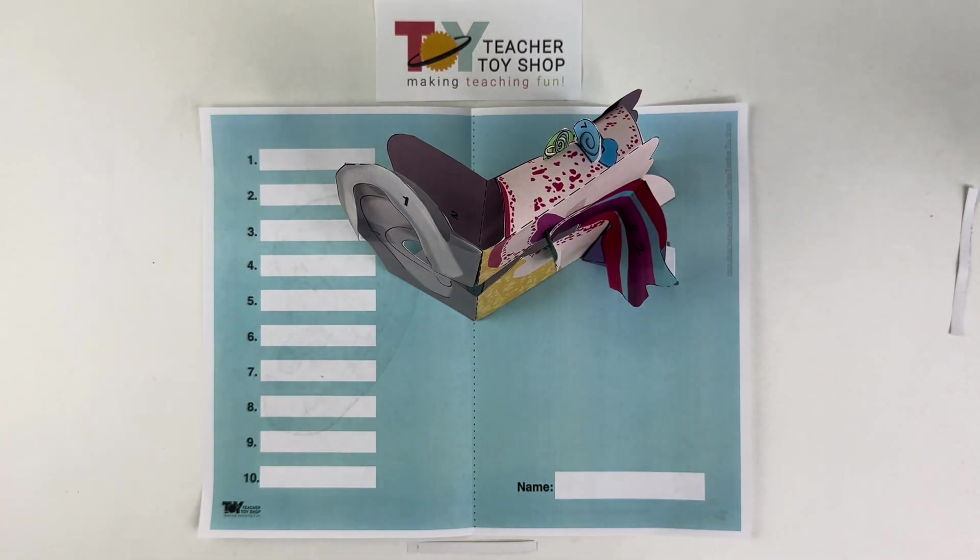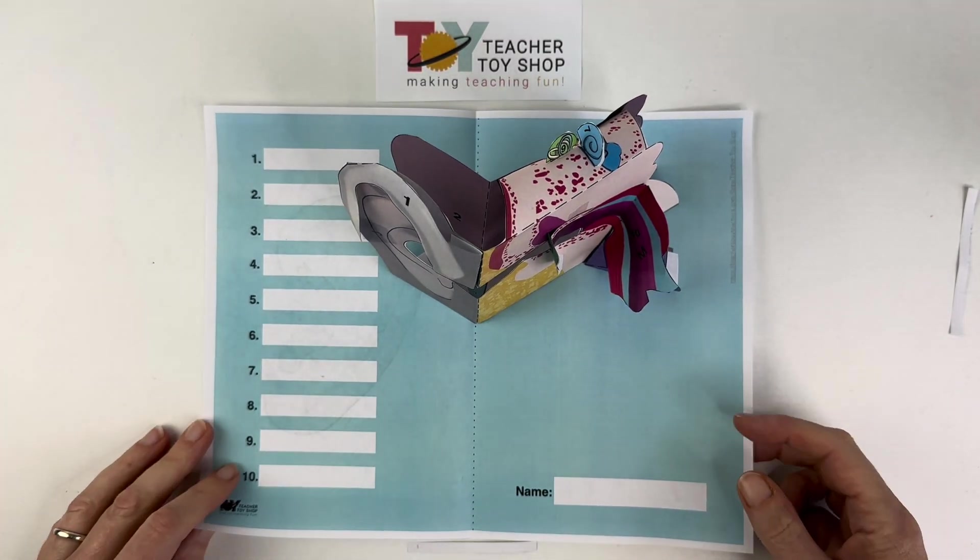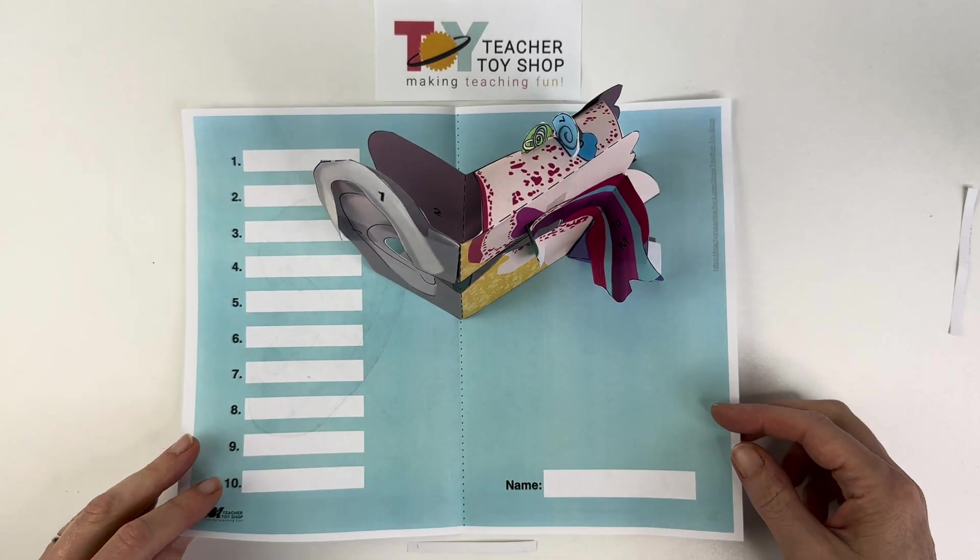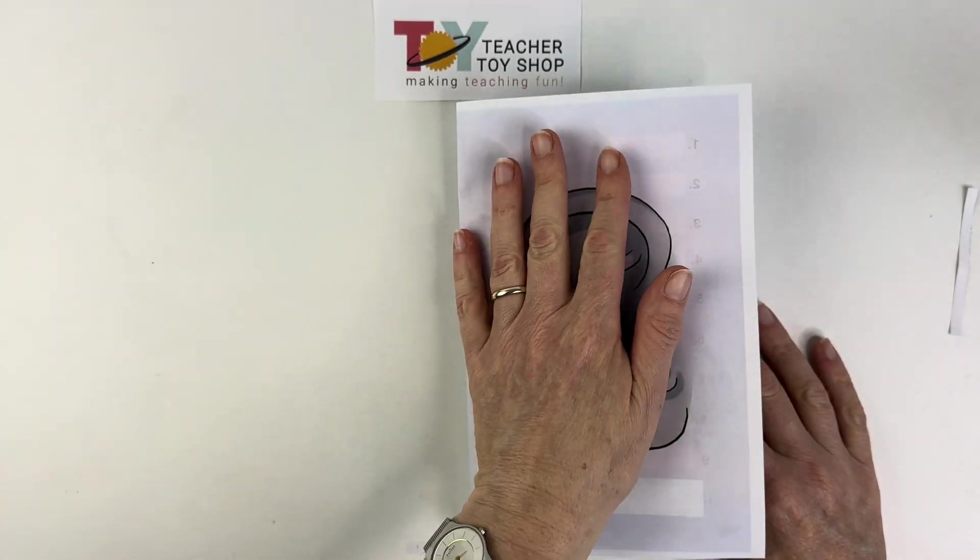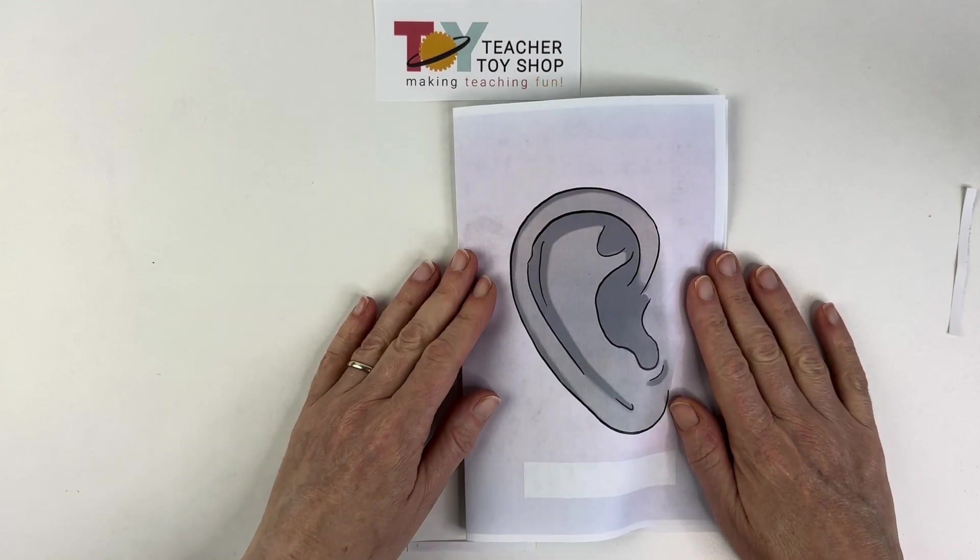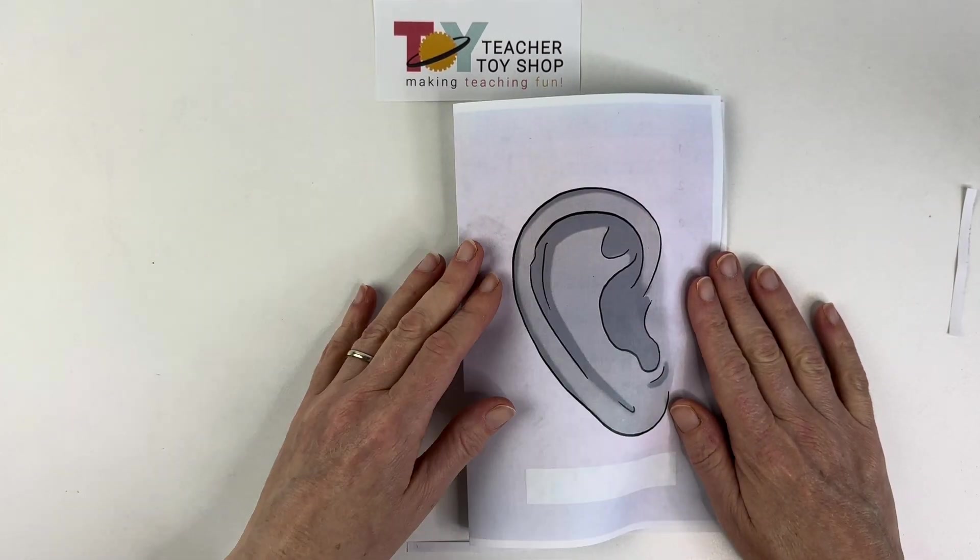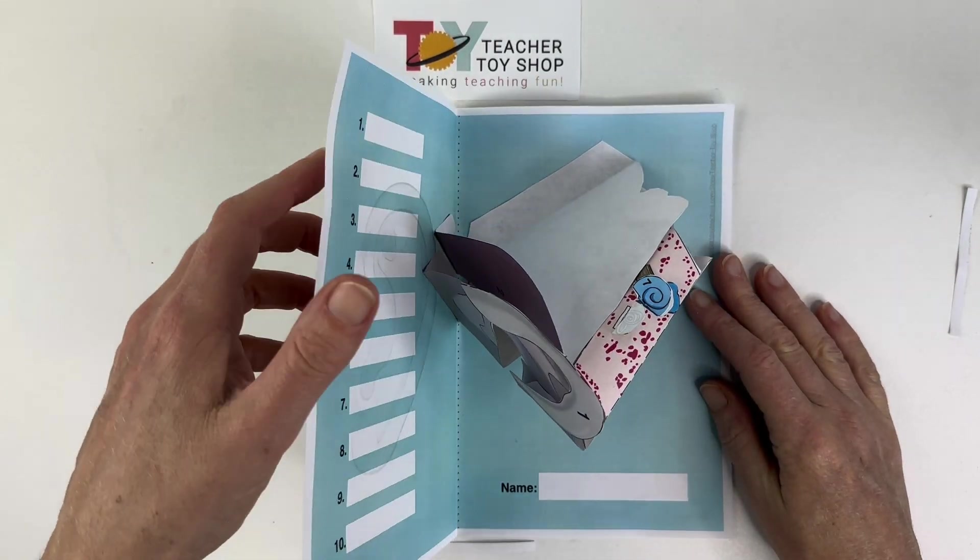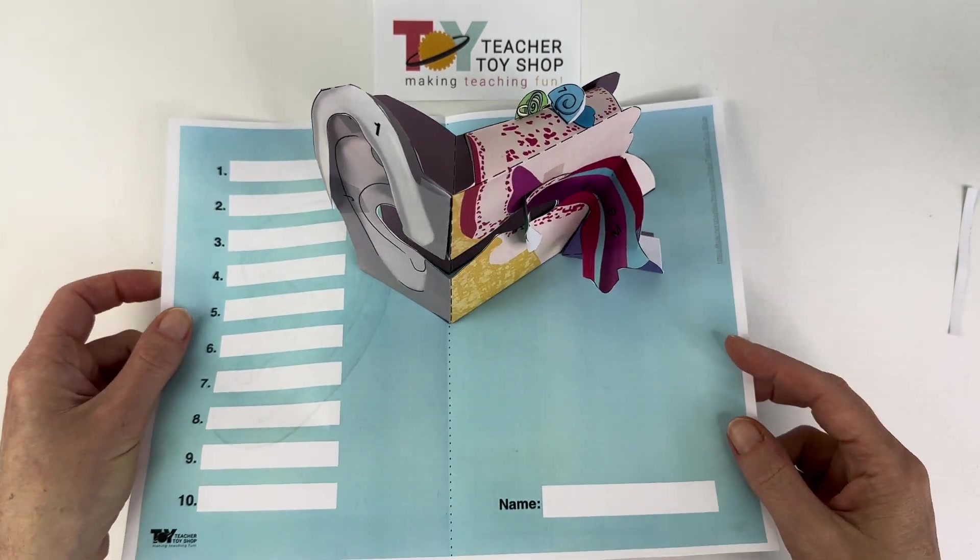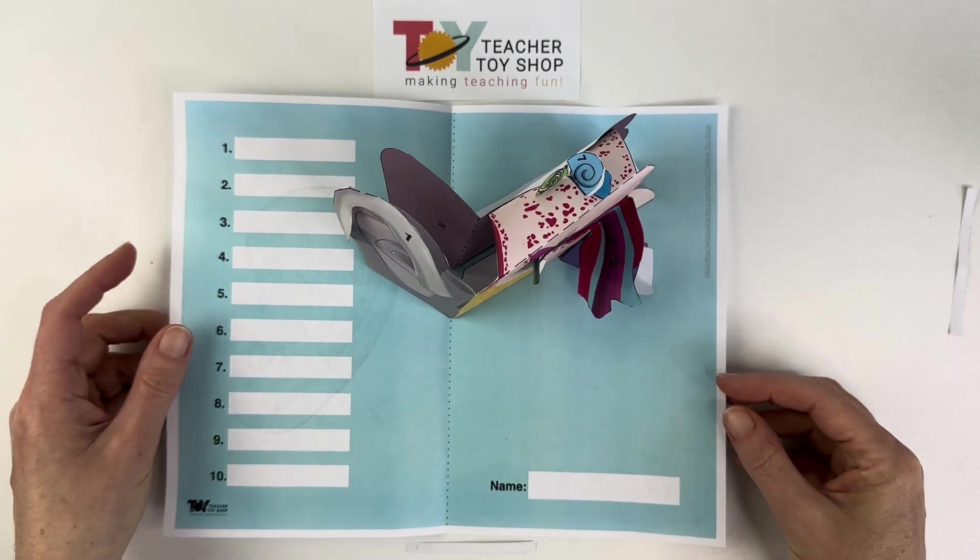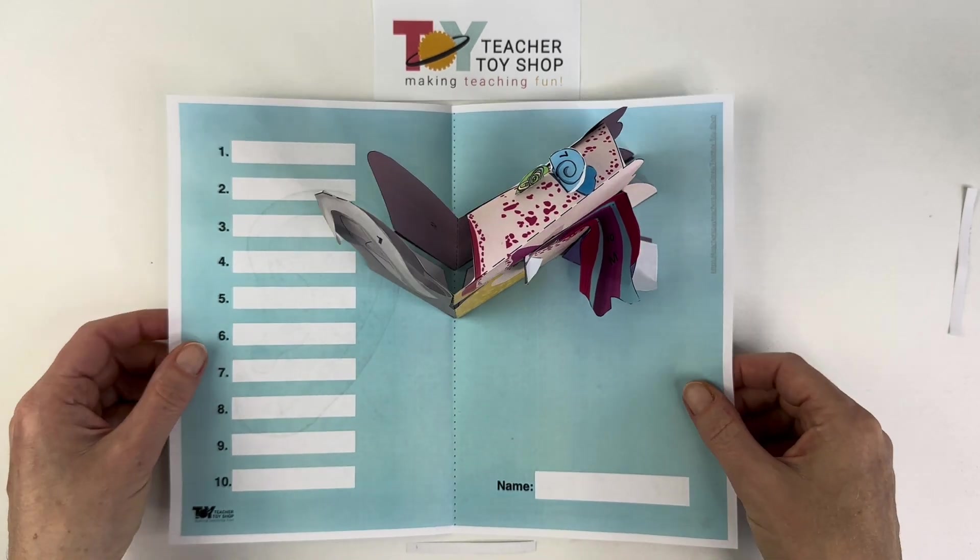Hello from Teacher Toy Shop. Today I would like to show you how to make a 3D model of a human ear that pops up when opened. I'm going to close it like this. You may or may not want to put an ear image on the front, that's up to you, but you can see that it pops up to reveal the ear when I open it. So let's talk about how to make this.